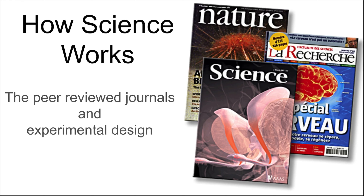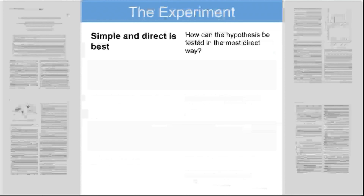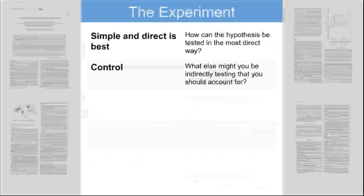What makes peer-reviewed journals distinct from other media is the process of making a simple and direct experiment. You want to test just the hypothesis you have and not inadvertently test other hypotheses — testing one thing at a time. You also want to have a control, and controls remove variables. We'll go into that more as we have better examples that illustrate what controls are.